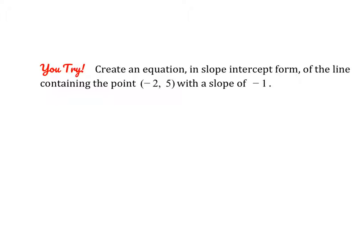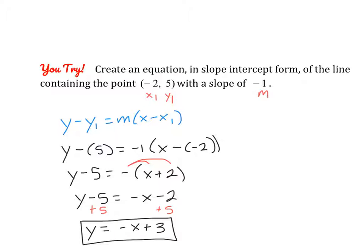Go ahead and pause the video and give this last one a try. We'll check our answers in just a moment. We have a slope of negative 1 and a point (negative 2, 5). Since we only have the slope and a point, we use point-slope form: y minus 5 equals negative 1 times (x minus (negative 2)). Rewrite the two negatives as a plus, then distribute: y minus 5 equals negative x minus 2. Add 5 to each side to get y equals negative x plus 3.